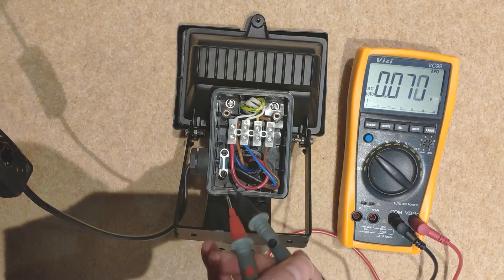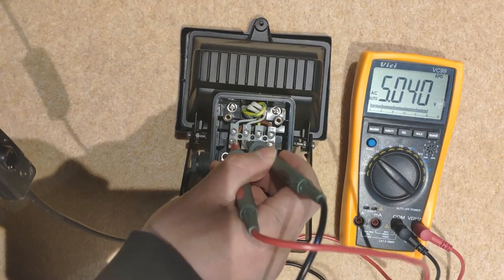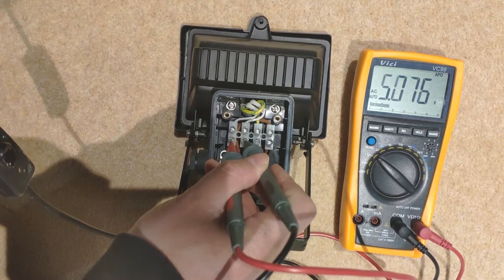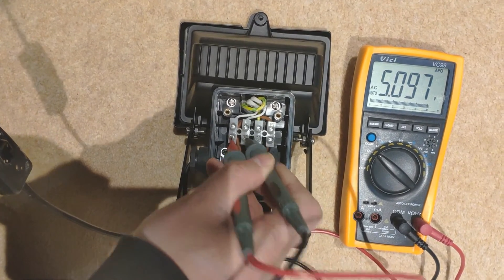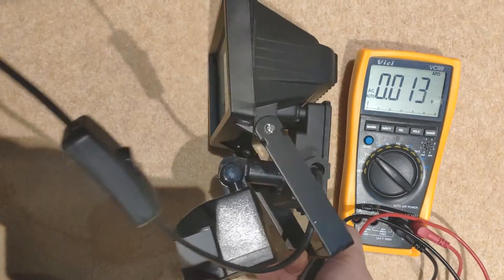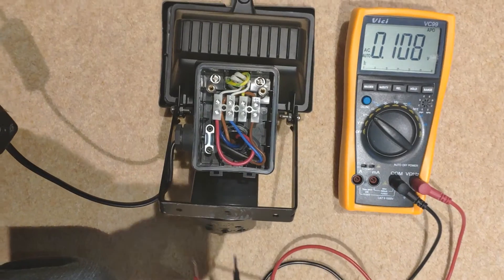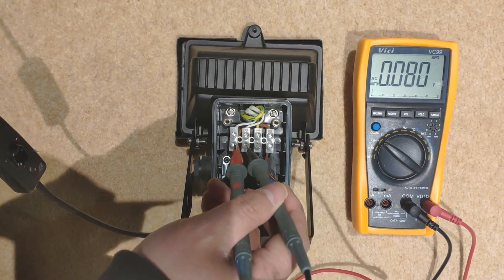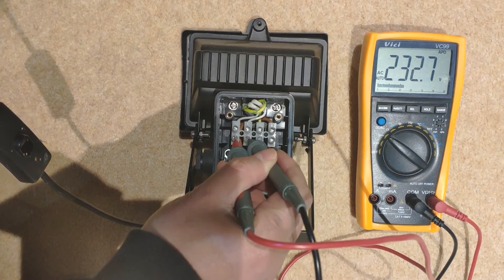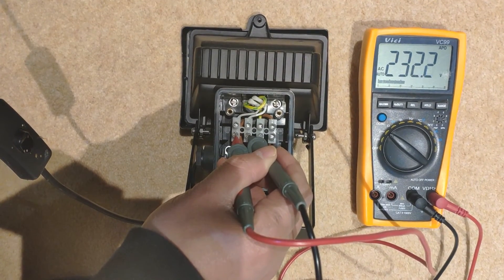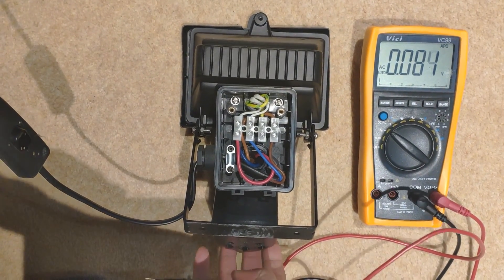Now let's measure the output. The output is pin 1 and pin 2. This is not active, so let's make it active. Measuring the output, pin 1 and pin 2, which is 233 volts as well. That shows the control circuit is working.